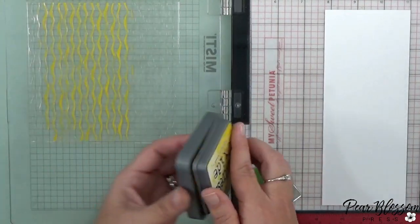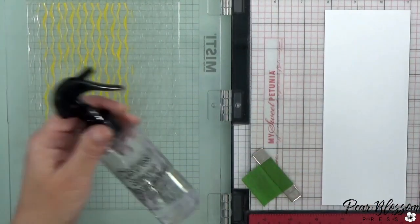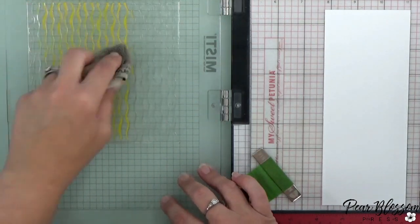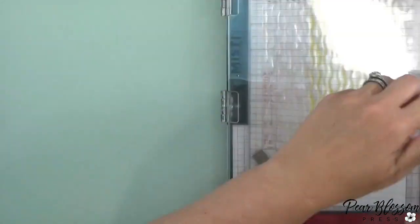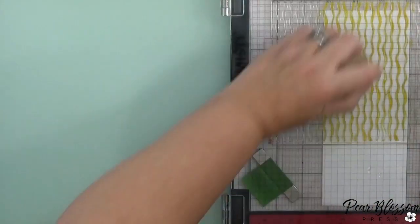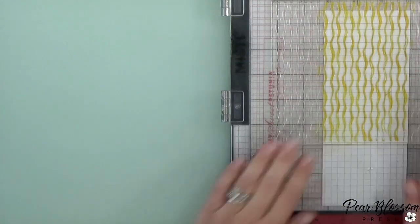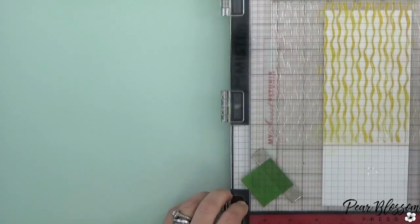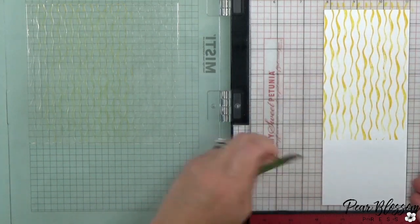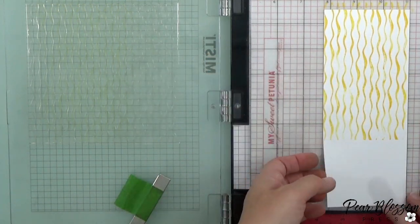And then now I'm just going to ink it up with some yellow ink. In this case I don't want really solid coverage here, so I'm going to mist it with a little bit of water and I'm going to lightly pick up some of that ink here and there, because what I want to create are like streamers in the background. And I'm giving the MISTI a little chance with the lid closed for the ink to just absorb into the paper there.